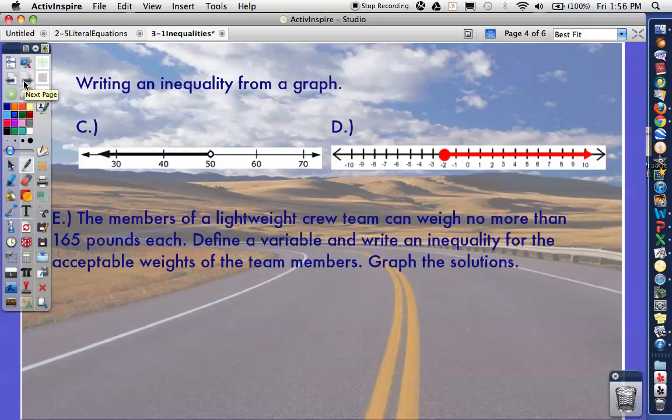If you are given a graph and you need to write an inequality, always look at the number that you're on. The circle here is on 50, so 50 is going to be part of my inequality. You can use whatever variable you want. Typically, we are all pretty used to X. And I'm going to say that X is what compared to 50? Well, notice where all your shading is. All your shading is over here on this side. So I'm looking at 30, 40, and 50. I'm looking at all the numbers that are less than 50. I'm not including 50 because the circle is open.